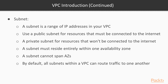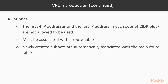You can use a public subnet for resources that must be connected to the internet, and a private subnet for resources that won't be connected to the internet. A subnet must reside entirely within one availability zone — it cannot span availability zones. While a VPC can span multiple availability zones within a region, a subnet is dedicated to one availability zone. By default, all subnets within the VPC can route traffic to one another. The first four IP addresses and the last IP address in each subnet CIDR block are reserved by AWS and cannot be used.